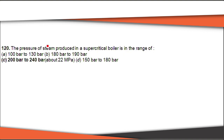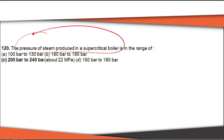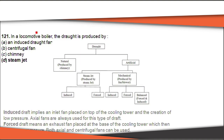The next question: what is the pressure of steam produced in a supercritical boiler? It is up to the range of 22 MPa. Converting to bar: 200 bar to 240 bar. The right answer is C.